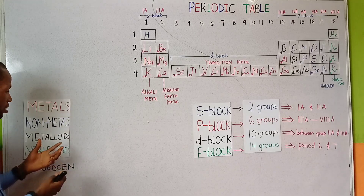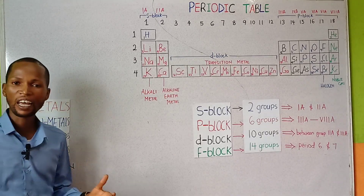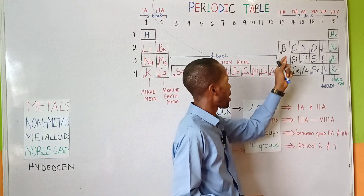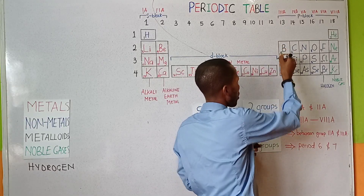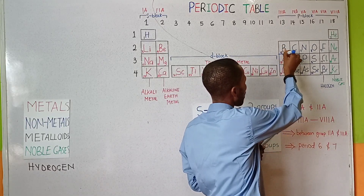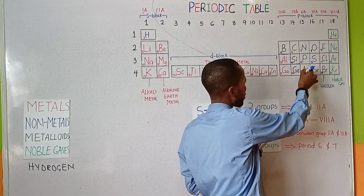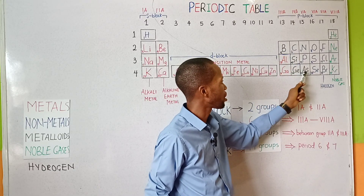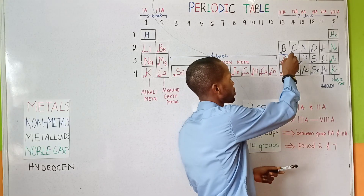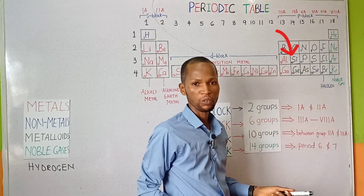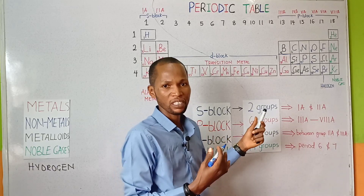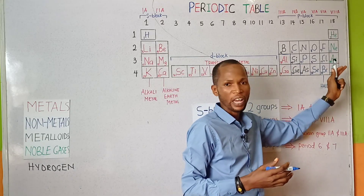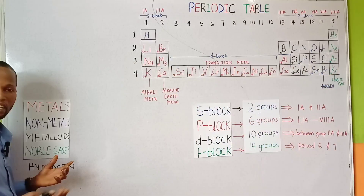The metalloids, also known as the semi-metals, are elements that have both metallic and nonmetallic character. They are represented by a dividing line that cuts across boron, silicon, and germanium. The metalloids include boron, silicon, germanium, and arsenic on this zigzag line of the periodic table. They serve as a boundary separating the metals on the left-hand side from the nonmetals on the right-hand side of the periodic table.